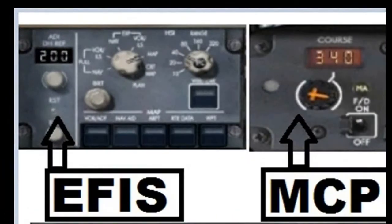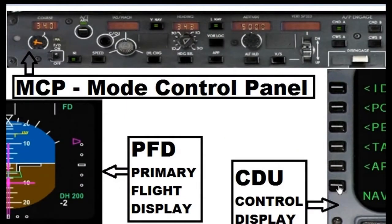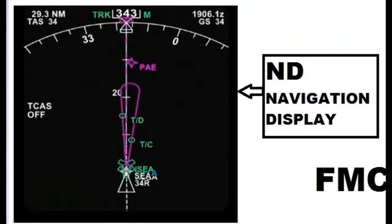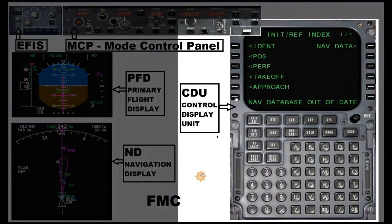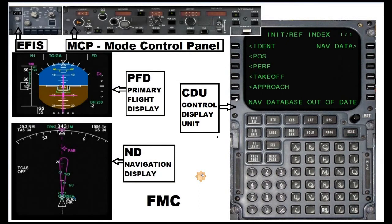Up on the top left we have the FS. The MCP is the mode control panel, basically your autopilot. The PFD is the primary flight display and the ND is the navigation display. And lastly the CDU is the control display unit — basically it is an input device to communicate with the FMC, the flight management computer.